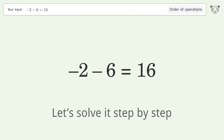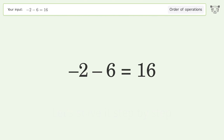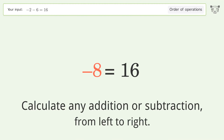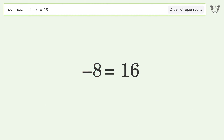Let's solve it step by step. Calculate any addition or subtraction from left to right. Negative 2 minus 6 equals negative 8, and so the final result is negative 8, equals 16.